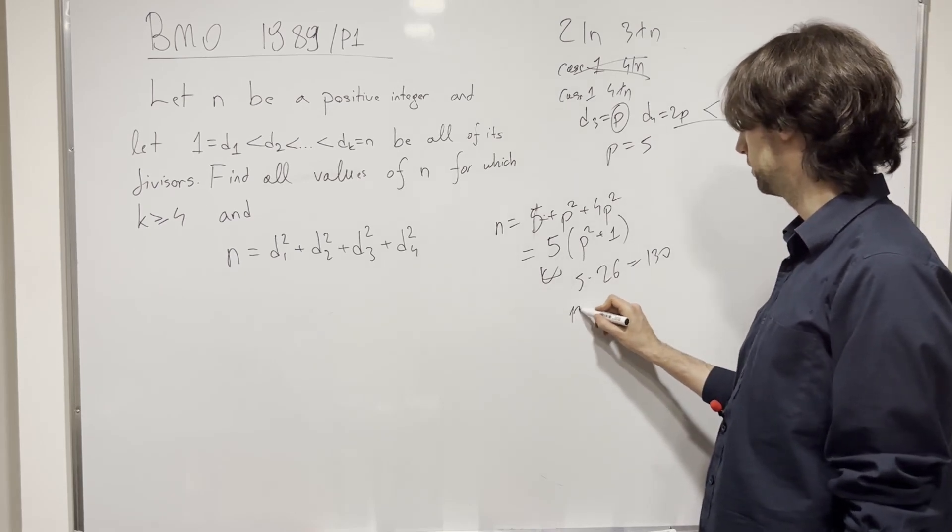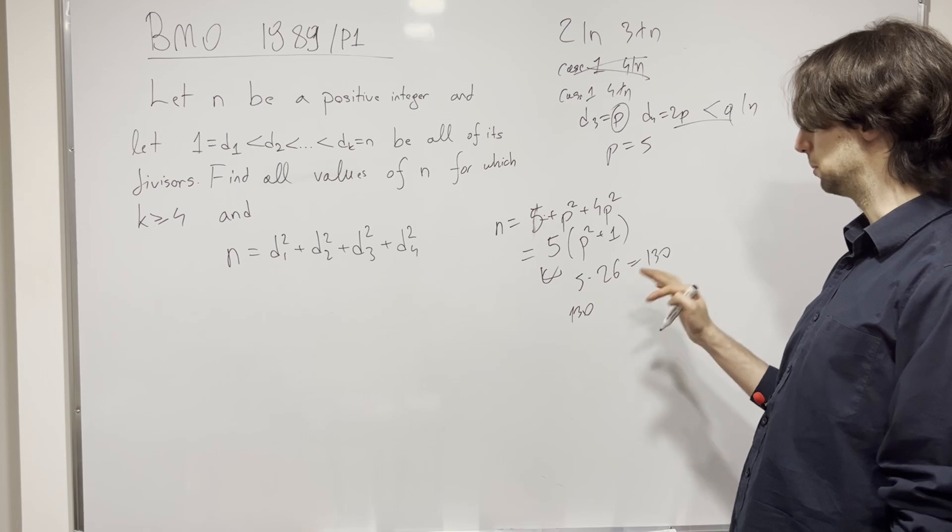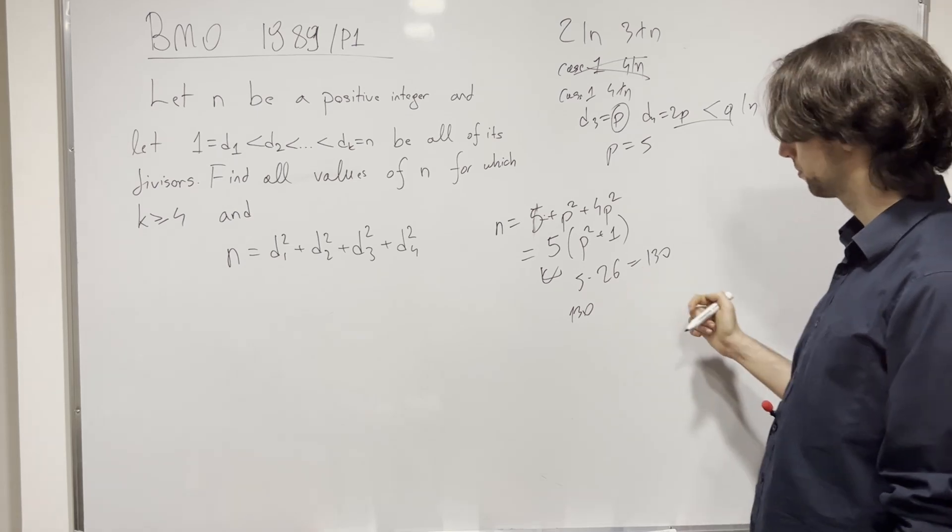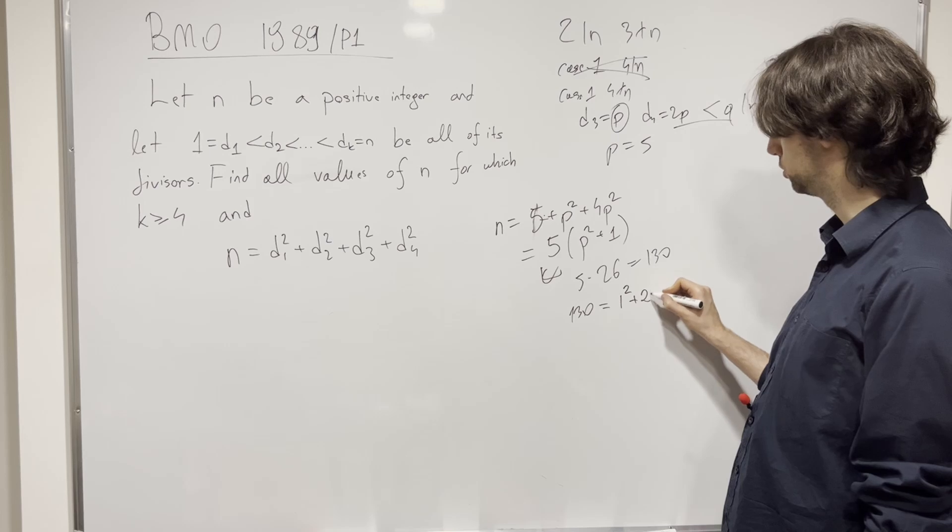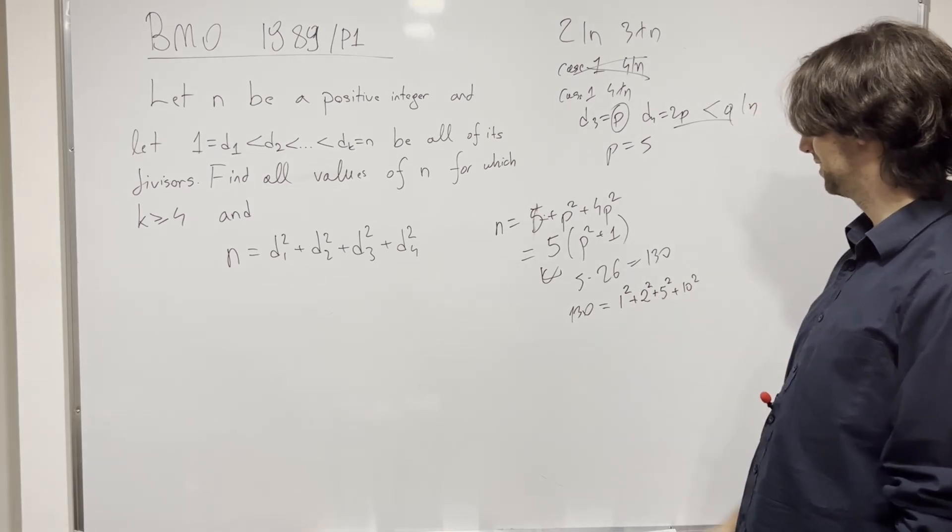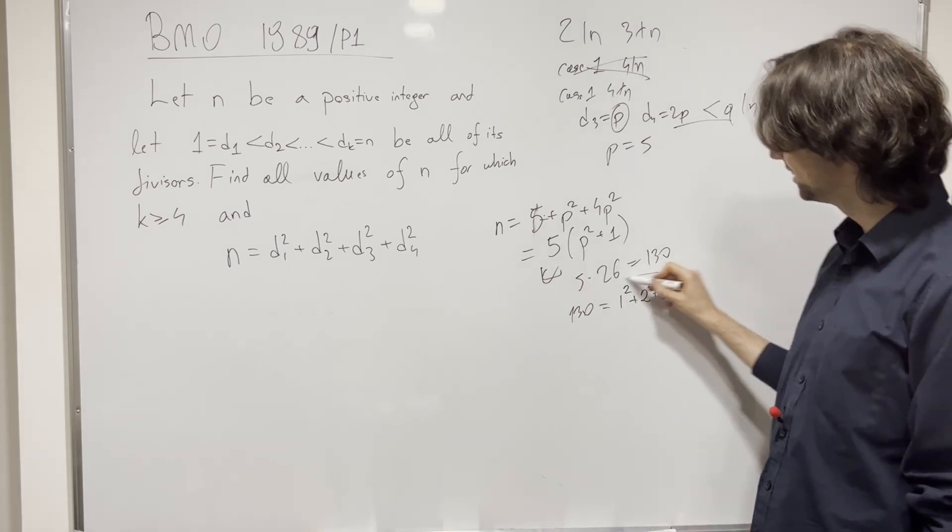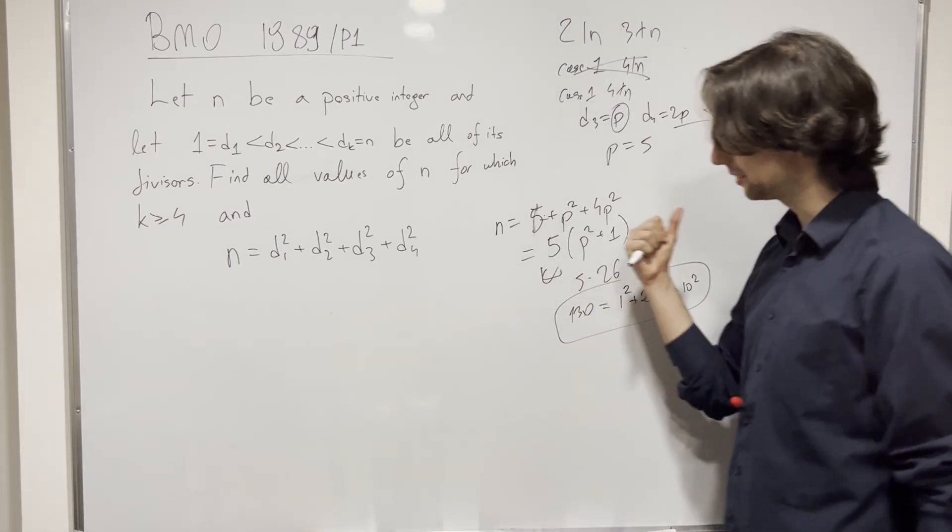And does this number work? This number is 130, so we would have 130, double-checking, it's 2 times 13 times 5, and this is equal to 1 squared plus 2 squared plus 5 squared plus 10 squared. Huh, nice! So this seems to be a solution, 130. Good case, good job.